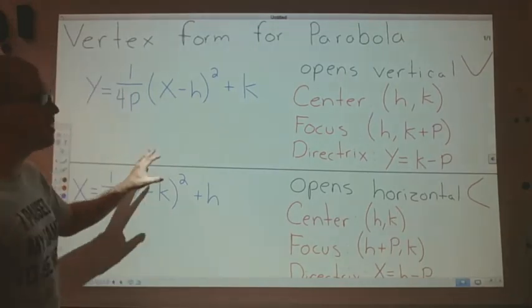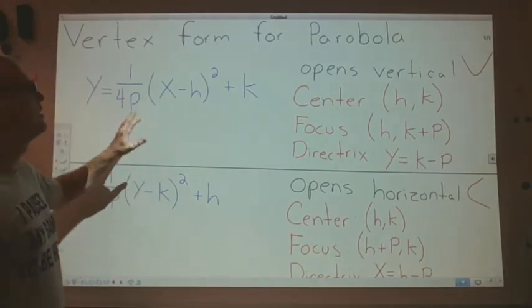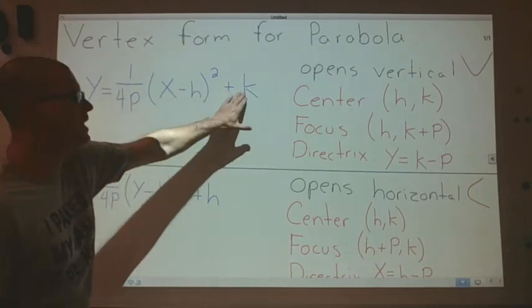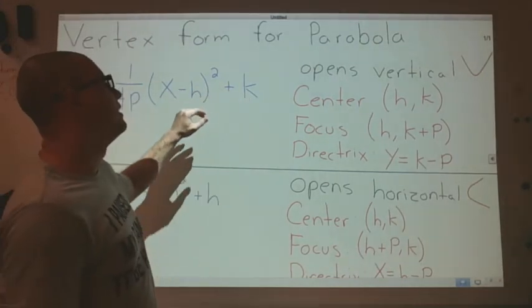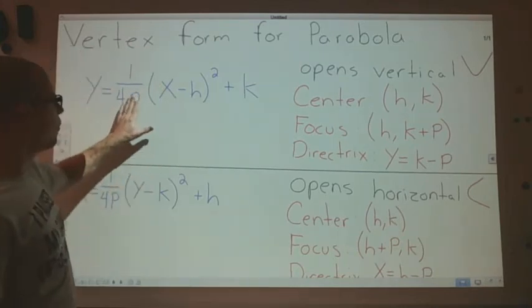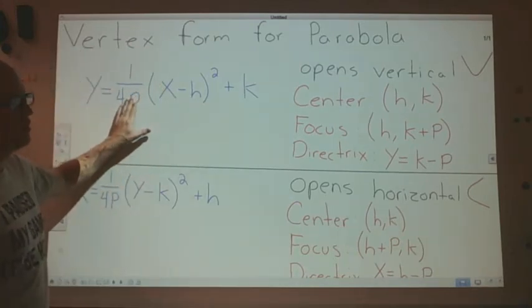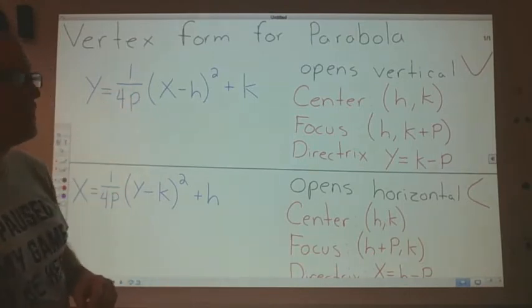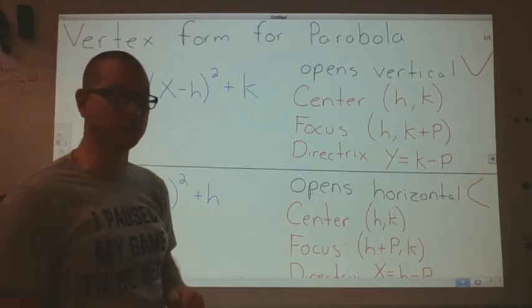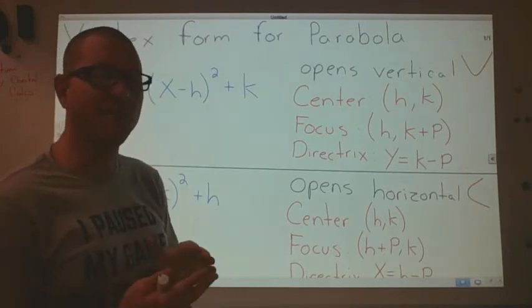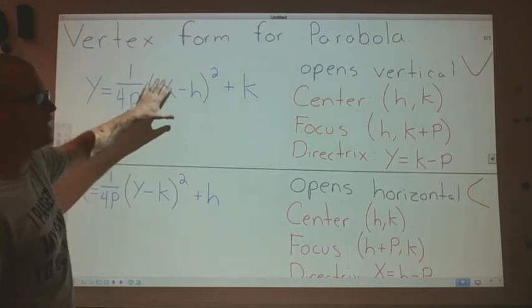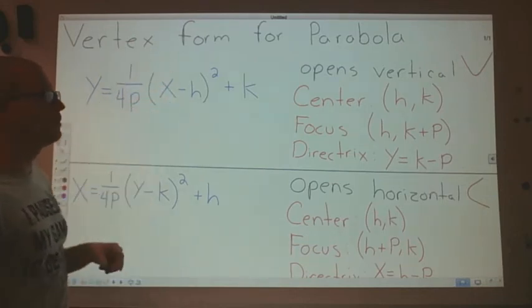So luckily when we get to conic sections the vertex form actually works. We have the h and the k that we're familiar with with the other conic sections and the radius to the focal point is actually in here as well. So all of the concepts that we saw with the other conic sections, not quite the same format. We see it's not really a circle being deformed like we did see with ellipses and hyperbolas.